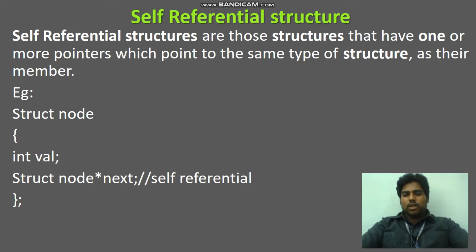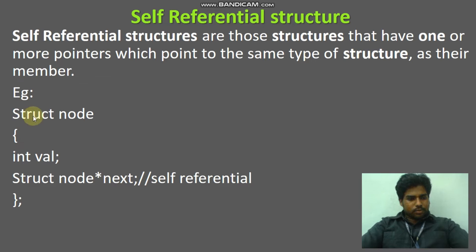Simply, if you want to understand this — self-referential structure means inside that, one pointer variable acts as your member. See this example. Struct node is the structure name.